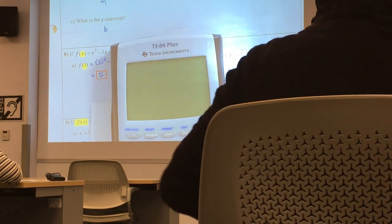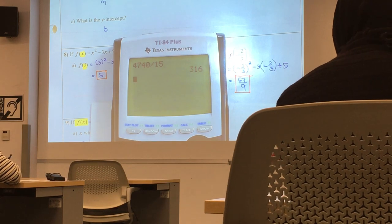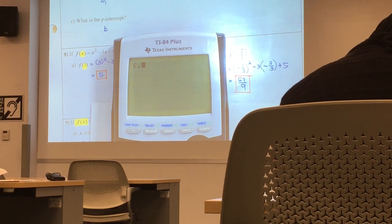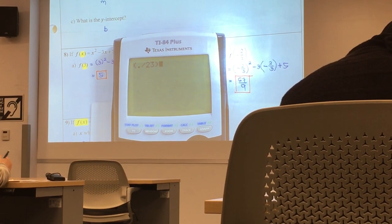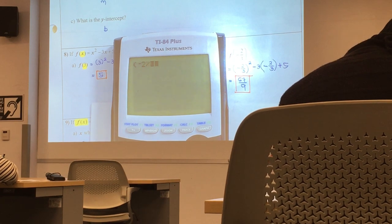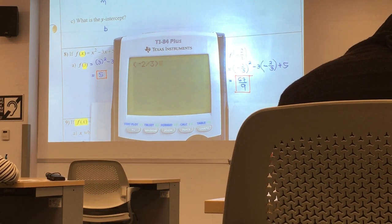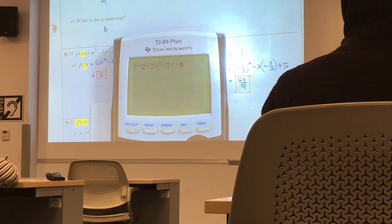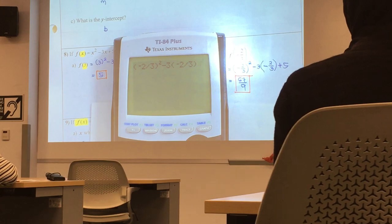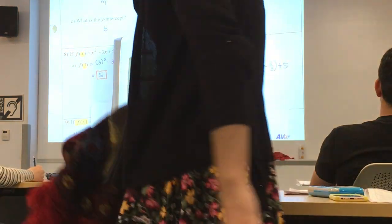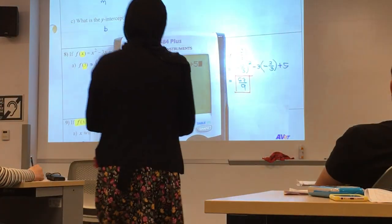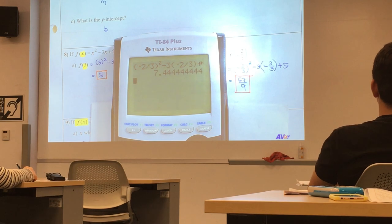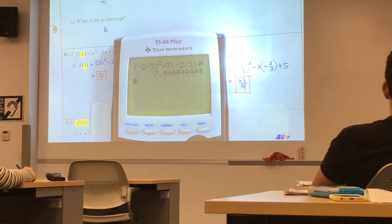Everyone, graphic calculator. Let me clear this. Open parenthesis. Put negative 2 divided by 3. Negative 2 divided by 3. And then you square it. X squared. And then minus 3. Quantity. Negative 2 divided by 3 again. And then plus 5. You should be getting that point. Yes?